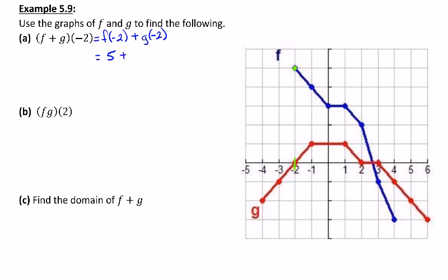And then g of negative 2 is found in the same way. Well, g is actually sitting right on top of the x-axis at negative 2, which means it has a y value of 0. And 5 plus 0 gives us 5. So that's the result for f plus g of negative 2. So like I said, no multiplication at all. It's just looking and picking out values off of the graphs, and then adding them together.